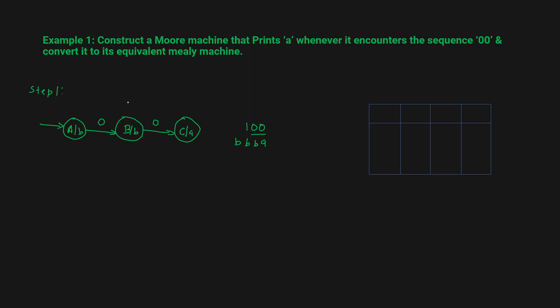Now if you don't know how to construct a Moore machine, I have already made examples on that — you can go and check them out first. So if you get input 1 in state A, you go to state A itself. And in state B, if you get input 1, you go back to state A.